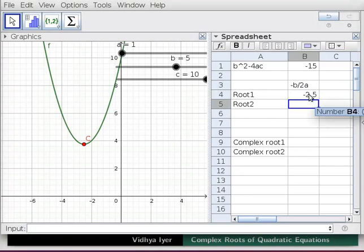In cell B4 type -b/(2*A) and press enter. Note the value -2.5 appears in cell B4. In cell B5 type B4 and press enter. The value -2.5 appears in cell B5 also.